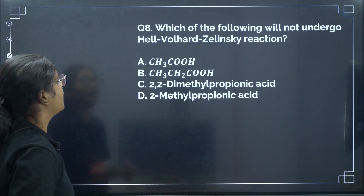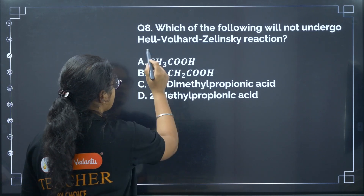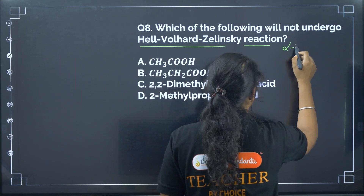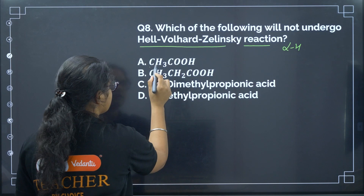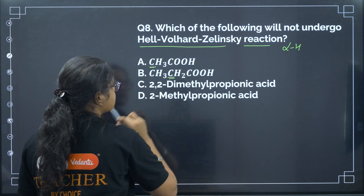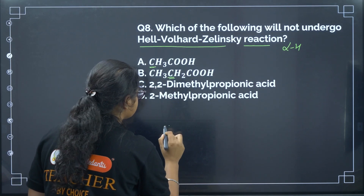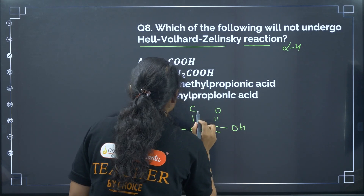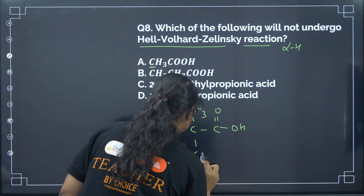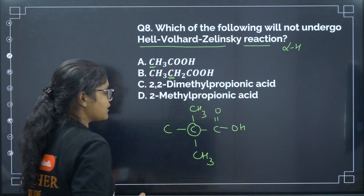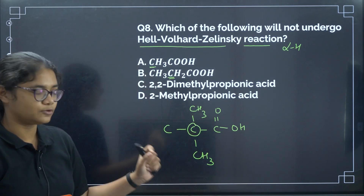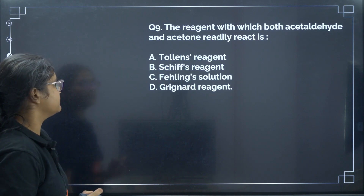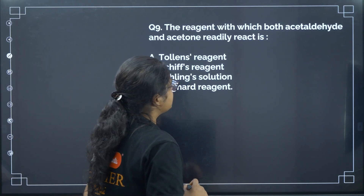Next: which of the following will NOT undergo the HVZ reaction? The condition for HVZ reaction is the presence of at least one alpha hydrogen. For 2,2-dimethylpropanoic acid, the alpha carbon has no hydrogen attached — there is no alpha hydrogen. So this compound will not show the HVZ reaction. Correct answer: option C.